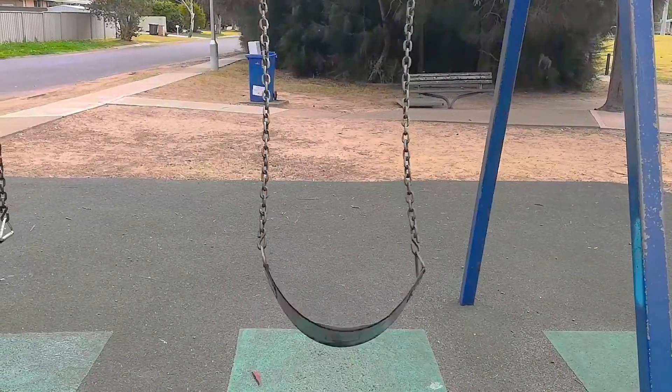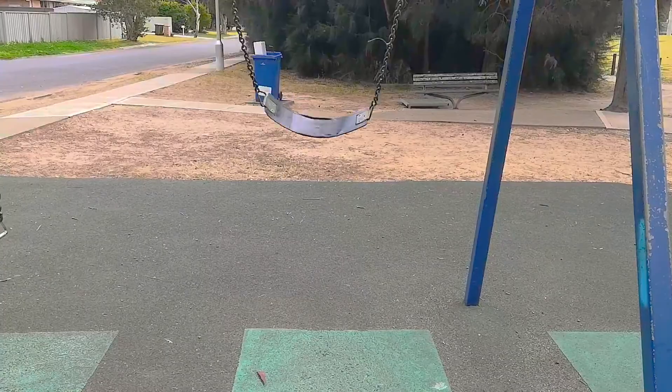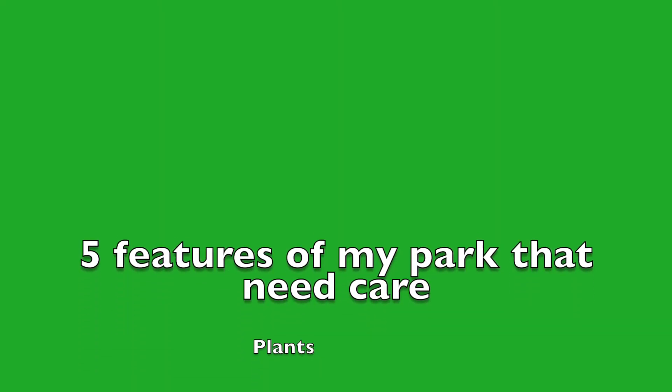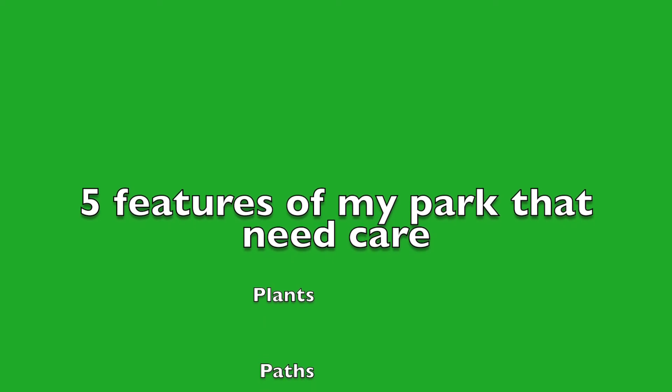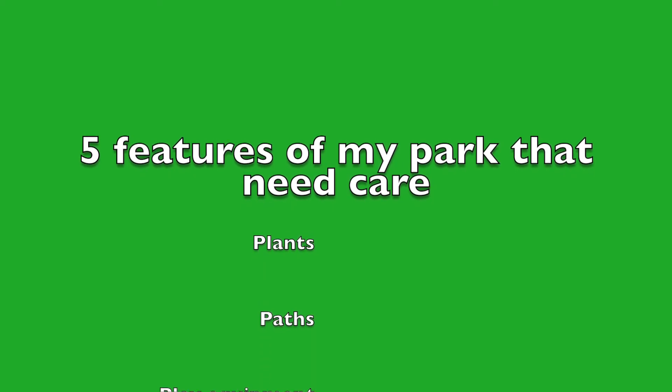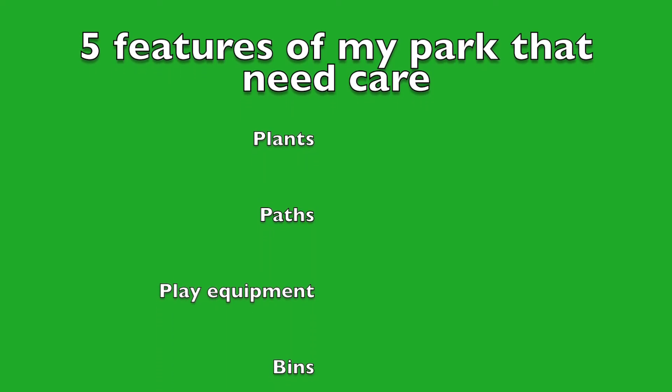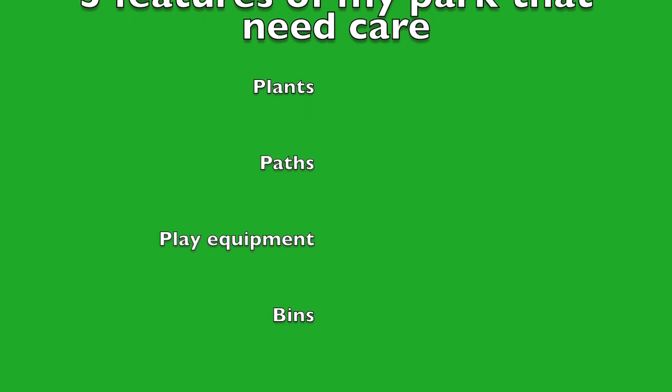Out of the five features you've listed or drawn, circle the features of your park that need caring for. I think that my park's plants, paths, play equipment, and bins all need caring for.